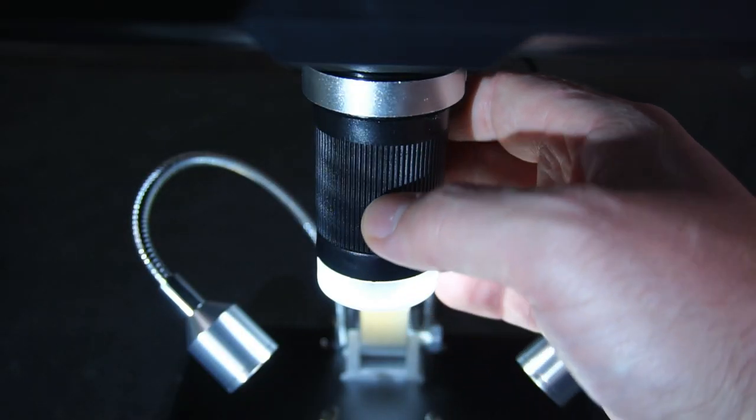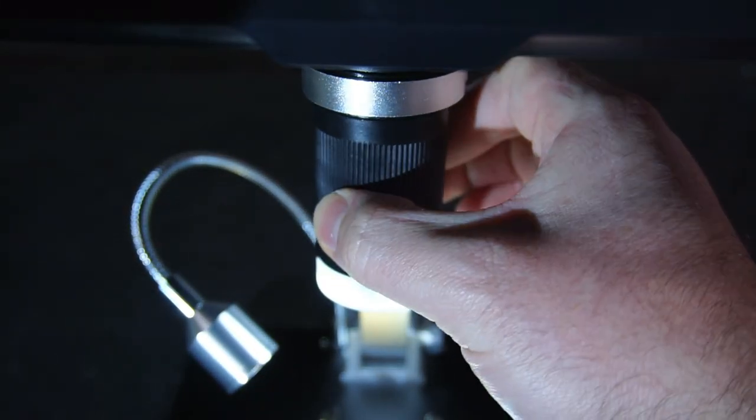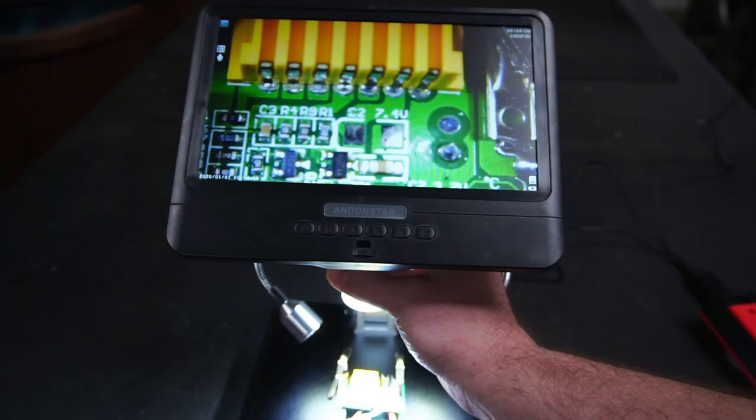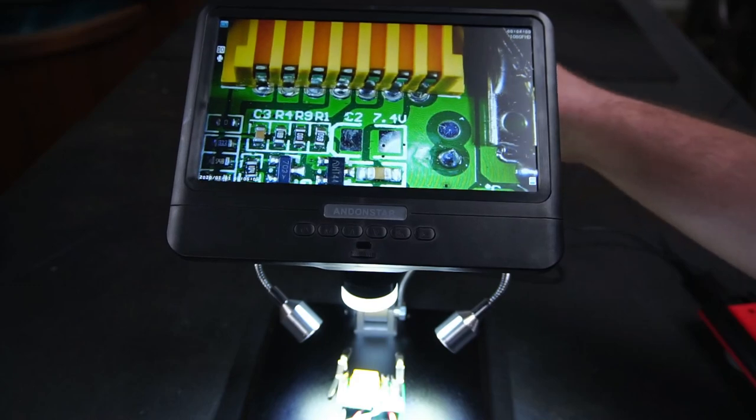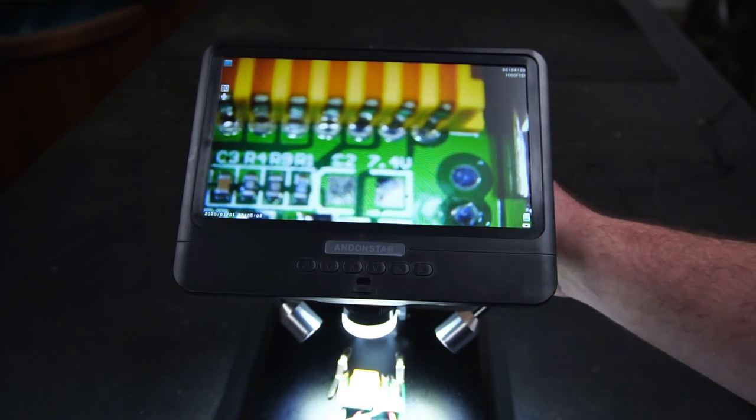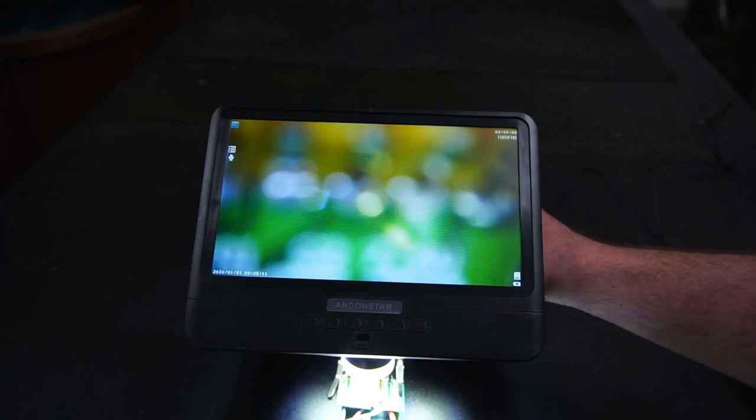Camera focusing is done manually by turning the focus ring. While the camera records in up to 1080p video, the display is only capable of 1280x800 resolution.